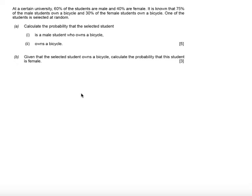We want to calculate the probability that a selected student is a male student who owns a bicycle and the probability that they own a bicycle.